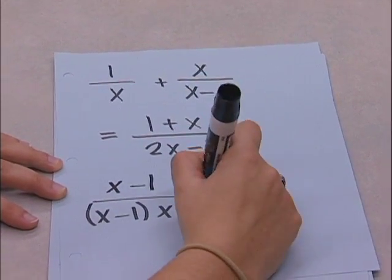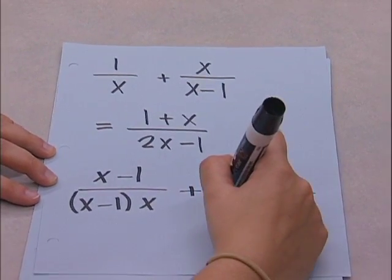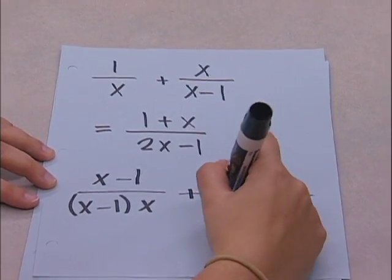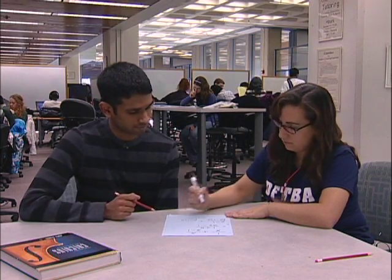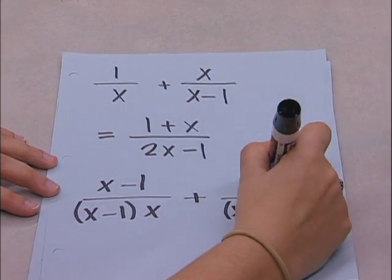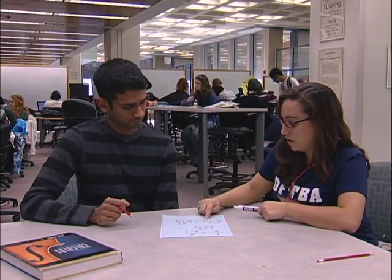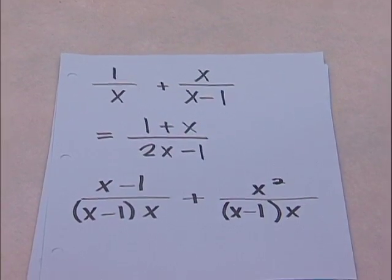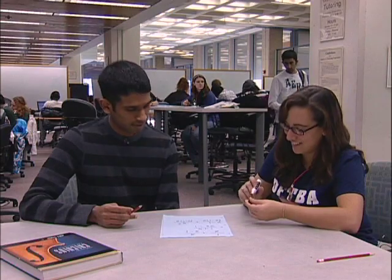Then it's plus. Now what's going to be your numerator for the second one? Um, x squared. Exactly. Now that we have them under our common denominator, you can put it into one fraction and just add your numerators. That makes sense. Thanks a lot. You're welcome.